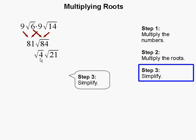And I pick 4 and 21 because I know that we can take the square root of 4, and therefore this can be simplified further.